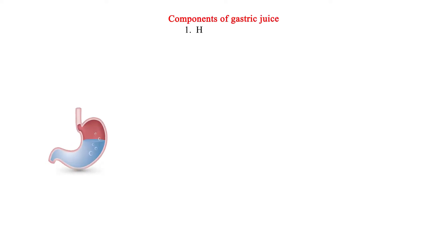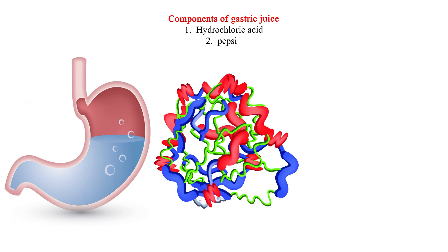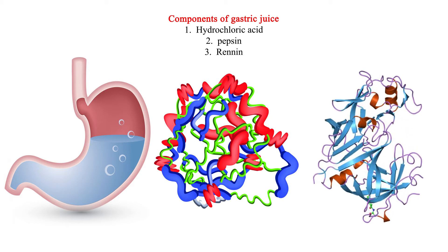Components of gastric juice: 1. Hydrochloric acid. 2. Pepsin. 3. Renin.